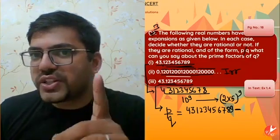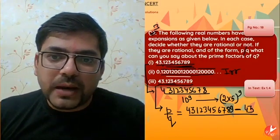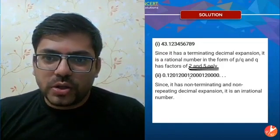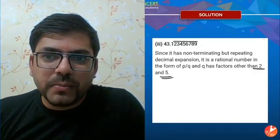For a non-terminating non-repeating number like 0.120120012000... where the pattern keeps changing (one zero, two zeros, three zeros...), it is irrational. For a non-terminating repeating decimal, use the bar method: write all digits, subtract the non-bar digits, and divide by as many 9s as there are digits under the bar. The prime factorization of that denominator will not be of the form 2ⁿ·5ᵐ, confirming it's non-terminating.